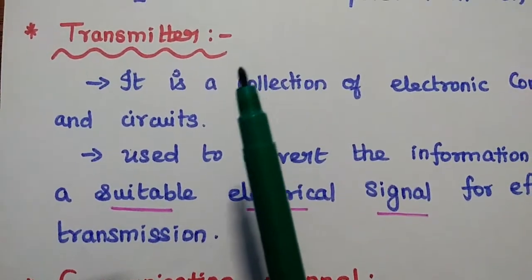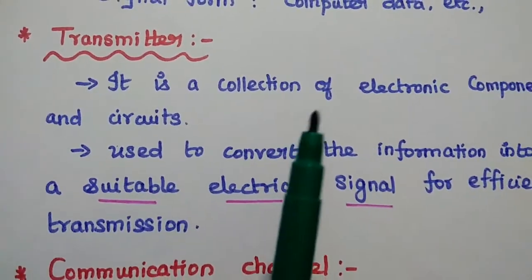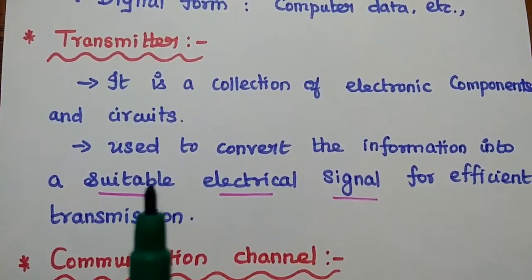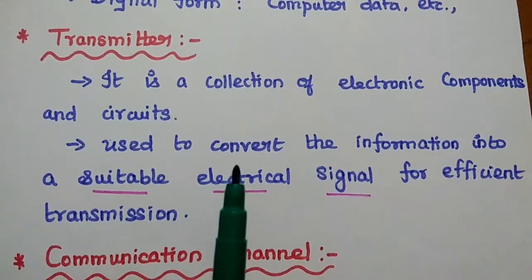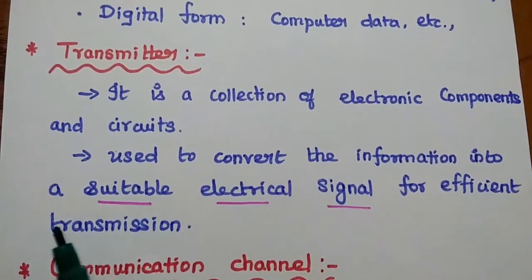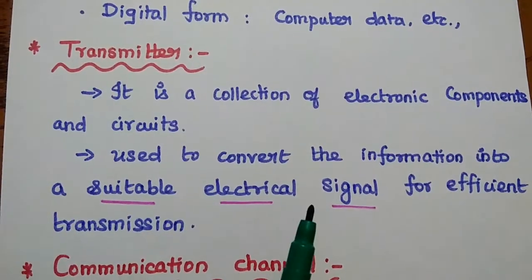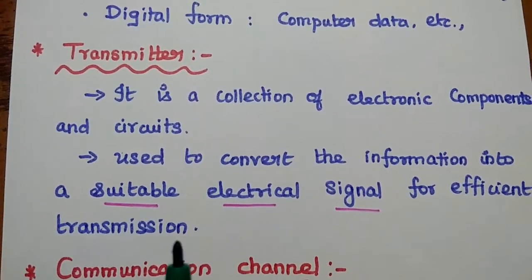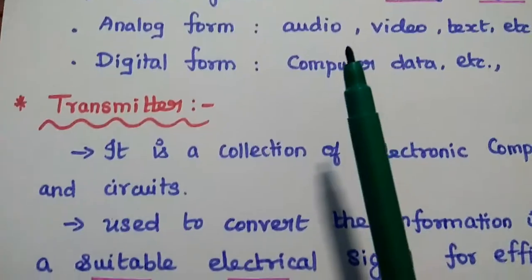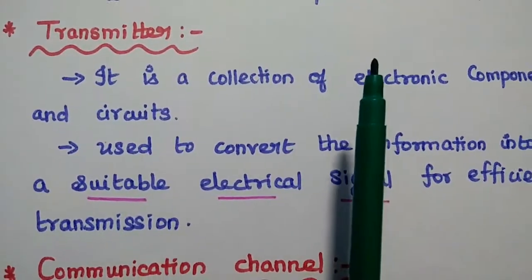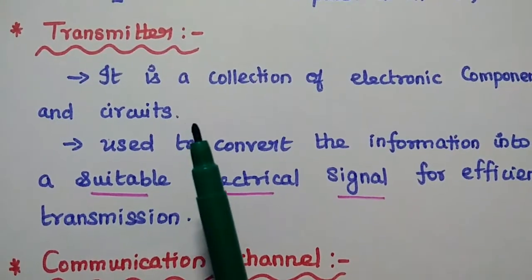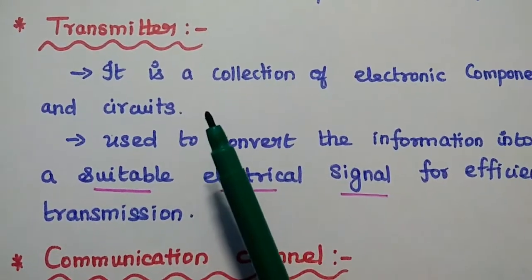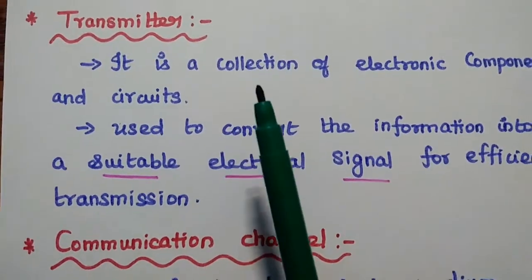The transmitter is a collection of electronic components and circuits. It is used to convert the information into a suitable electrical signal for efficient transmission. The original signal cannot be transferred as-is, so we need to process the message signal for better transmission — that is the function of the transmitter block.